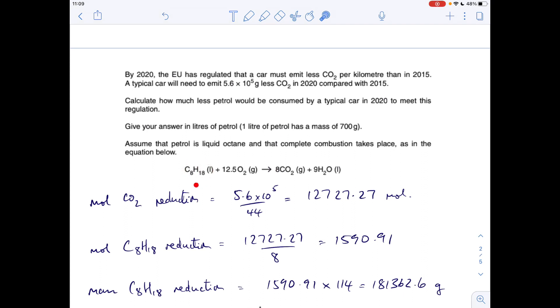So we know the moles of CO2 that has to be reduced, so the moles of petrol or octane, the same is equivalent to petrol, it's going to be that. So just divide that by it, we'll get 1590.91. So the mass of petrol reduction, moles times MR, and we get that many grams. So fairly straightforward so far, I hope you think.